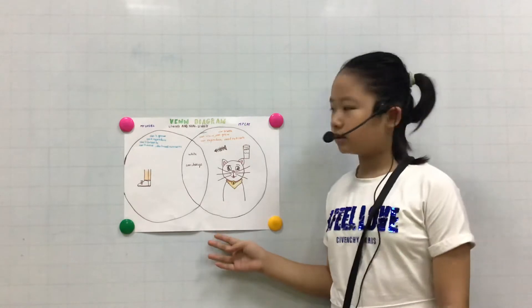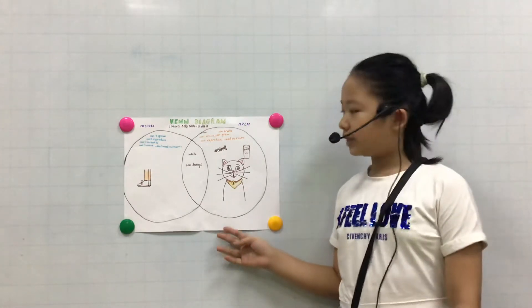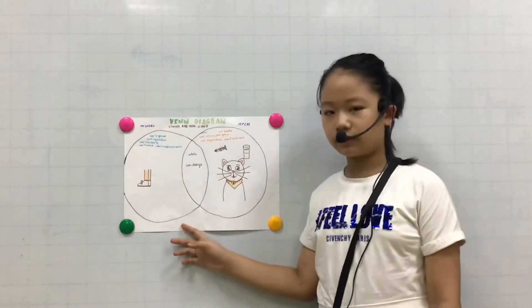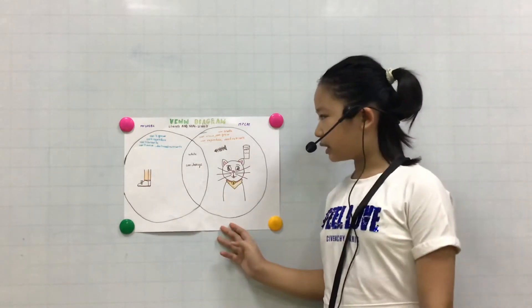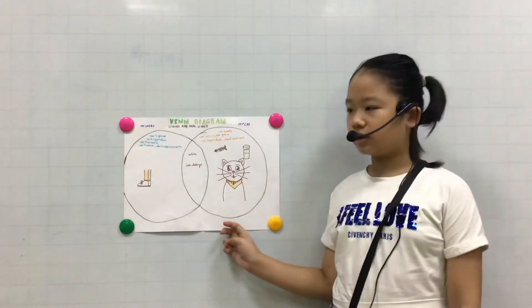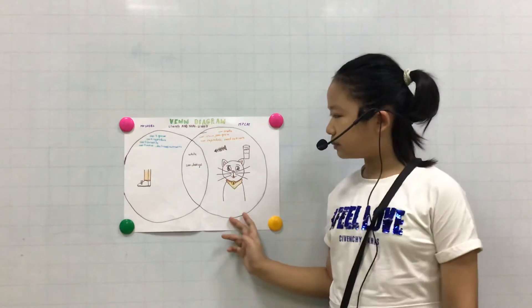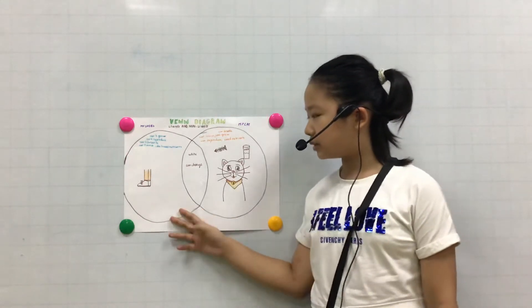This Venn diagram shows the difference and the similarities between the living thing and the non-living thing. The living thing is my cat and the non-living thing is my shoes. First, I'm going to tell you about the difference between my cat and my shoes.